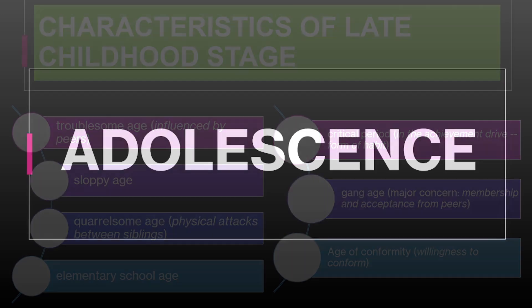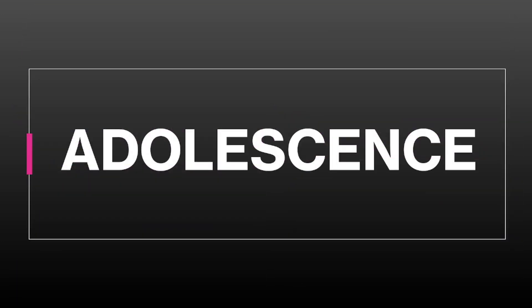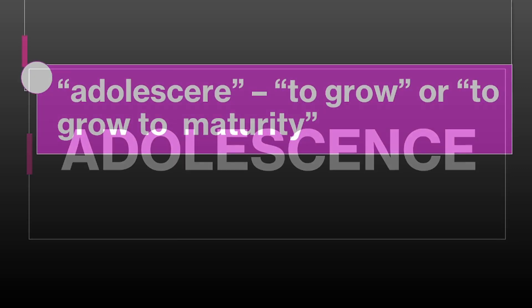Finally, let's discuss the characteristics of adolescence, from around ages 13 to 18. The word 'adolescera' means to grow, and this stage involves significant physical and psychological growth. An adolescent might experience a growth spurt, and their body undergoes changes associated with puberty, such as developing acne or growing taller.